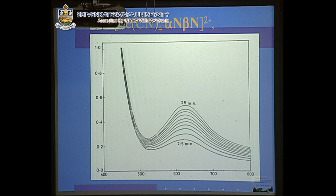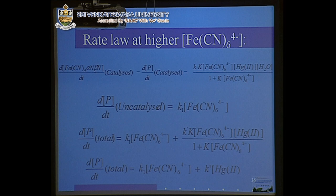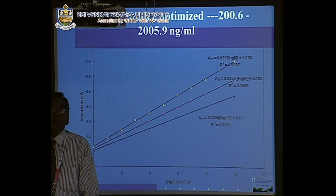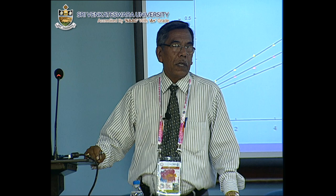This shows the UV-visible spectrum of the complex over time, and a mechanism is proposed. Based on this mechanism and mathematical manipulation, a similar expression was derived, and the total rate is directly proportional to the mercury concentration. The calibration curve shows a range starting at 200 — it is less sensitive compared to the previous system but has a very long concentration range.